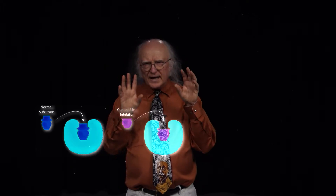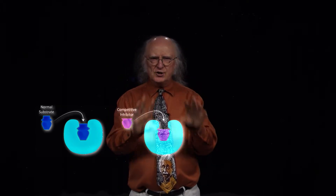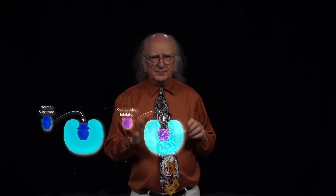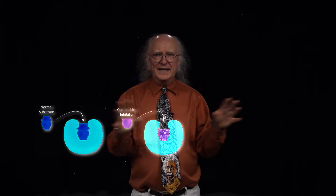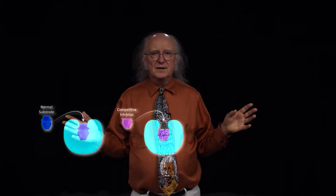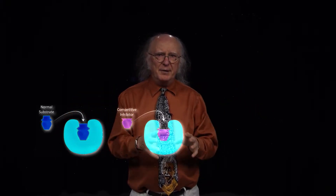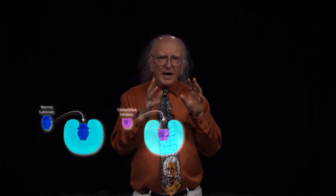A competitive inhibitor, on the other hand, is a molecule that looks and has a shape very much like the normal substrate for an enzyme, but when it binds to the enzyme, the enzyme can't do anything with it. This competitive inhibitor is basically occupying the enzyme and keeping it from working on its normal substrate.